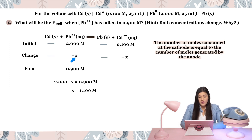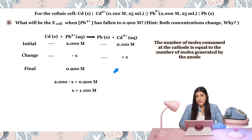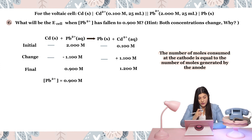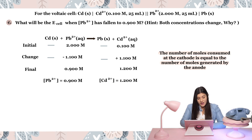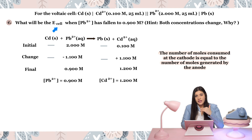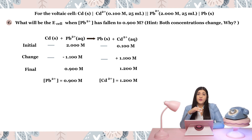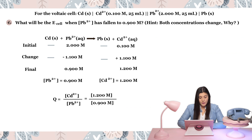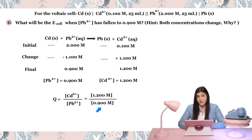Now that I know X = 1.1, I plug that in to find the final concentration of cadmium: 0.1 plus 1.1 gives 1.2 M. So the final cadmium concentration is 1.2 M and the lead concentration is 0.9 M. Now I have to redo E of the cell using the Nernst equation. The new Q is products over reactants: 1.2 divided by 0.9, which gives Q = 1.33.